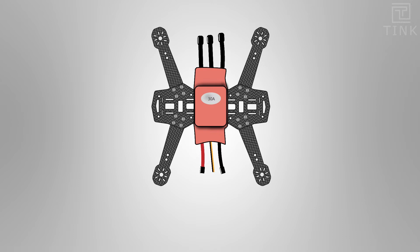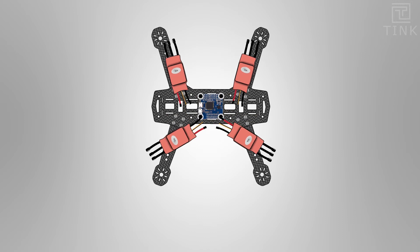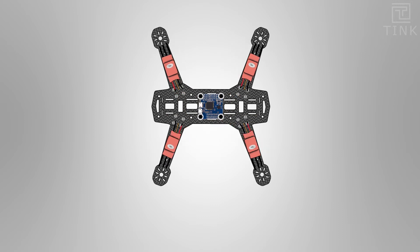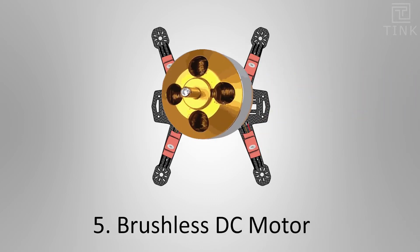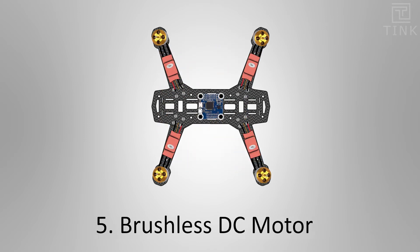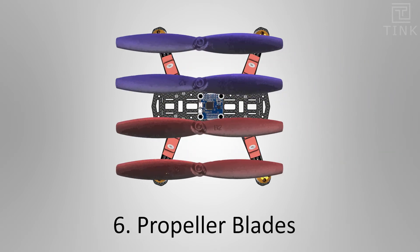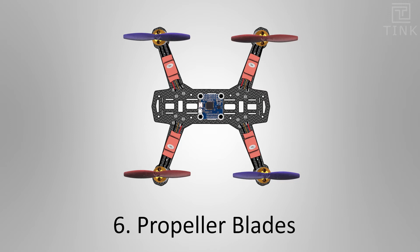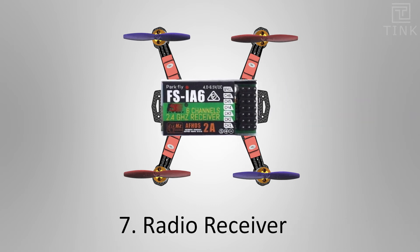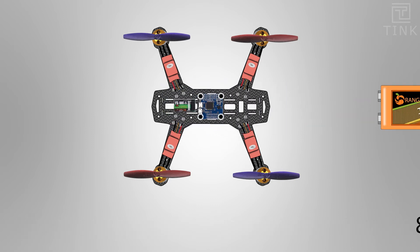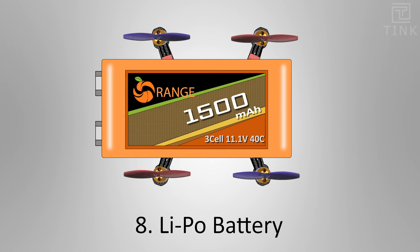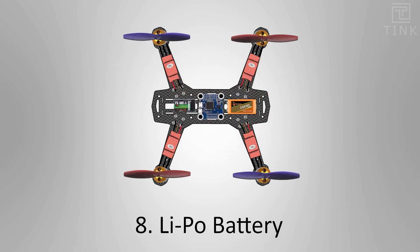We have one flight controller and 4 electronic speed controllers. Each electronic speed controller drives one of the 4 DC motors. We have 4 propeller blades on the drone. We also have a radio receiver and a battery — we use a lithium polymer battery, which can deliver current at a very low discharge time.